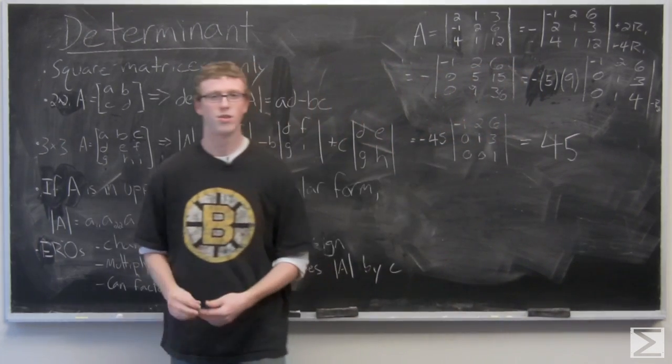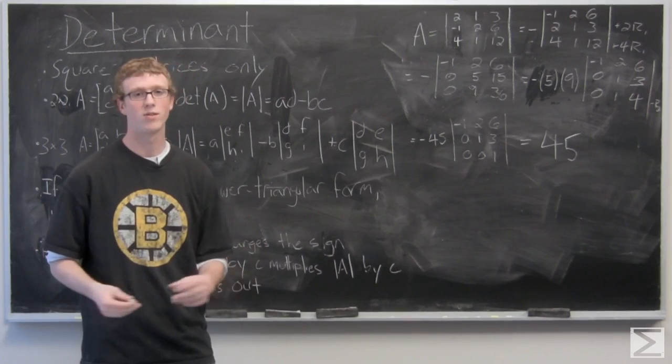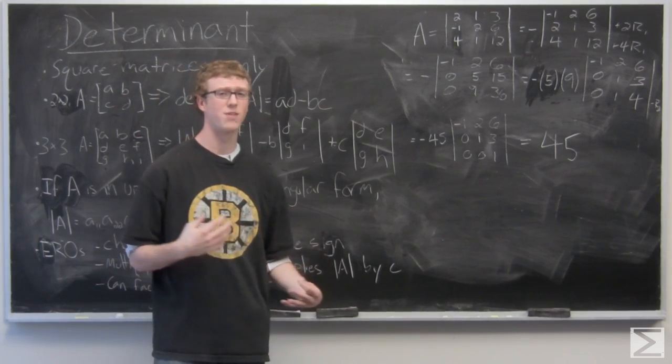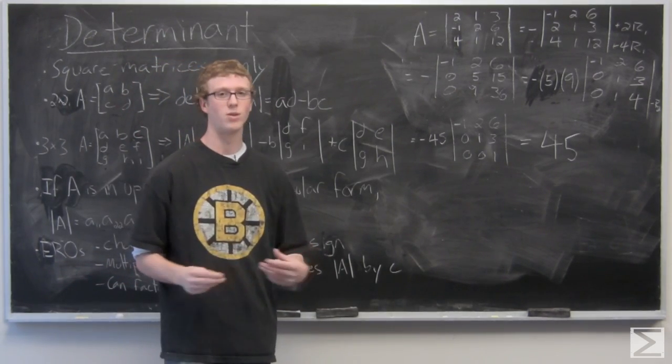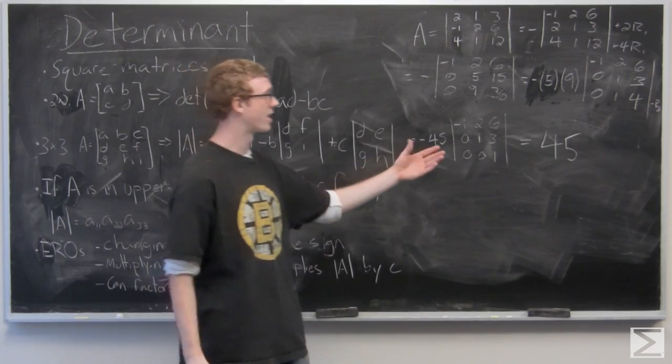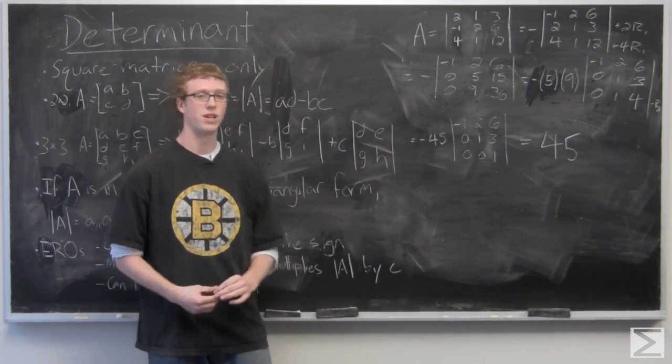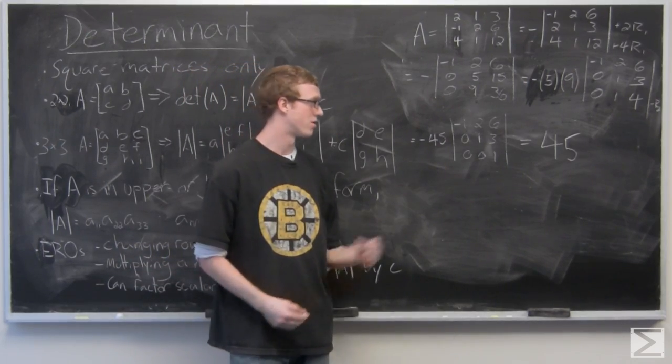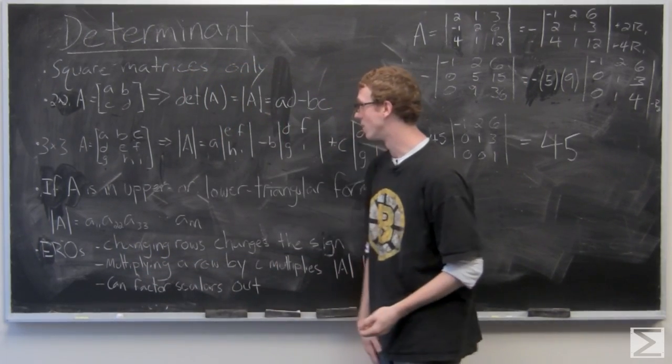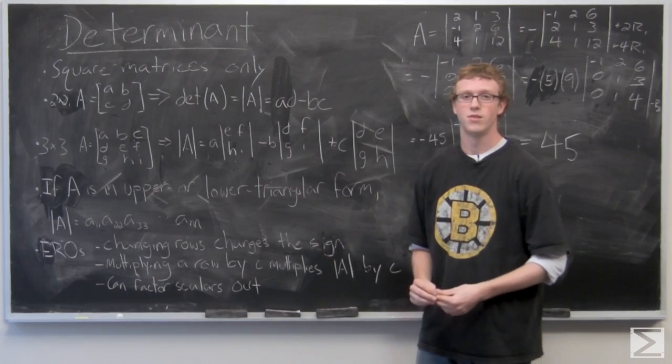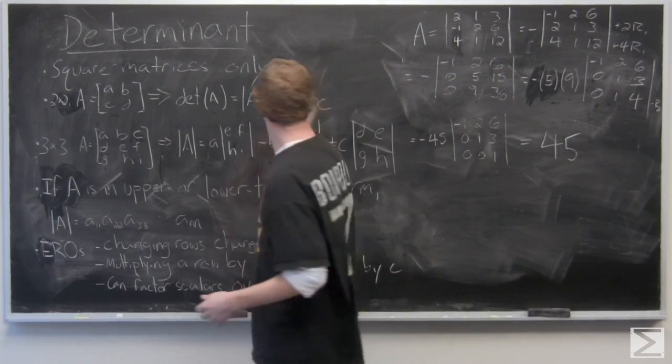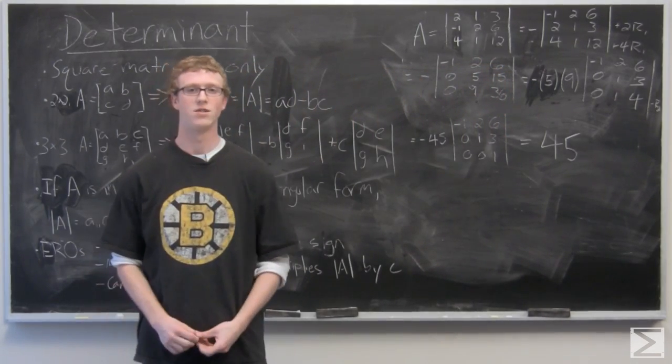So when you're using elementary row operations to find the determinant, you do have to be very careful and make sure that you always have the correct sign. And that you're always multiplying by the scalars that you're factoring out or multiplying the determinant through by. But we can see that elementary row operations do indeed help us get to the same form, the determinant here. And the determinant of that matrix A that we looked at is 45.